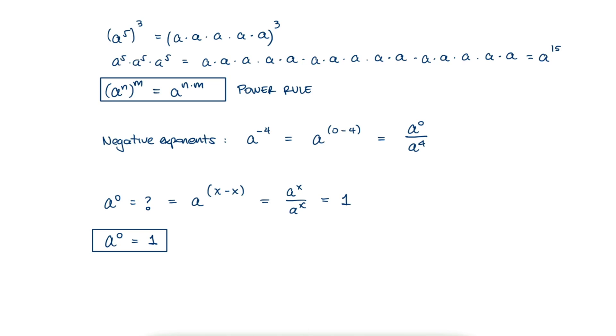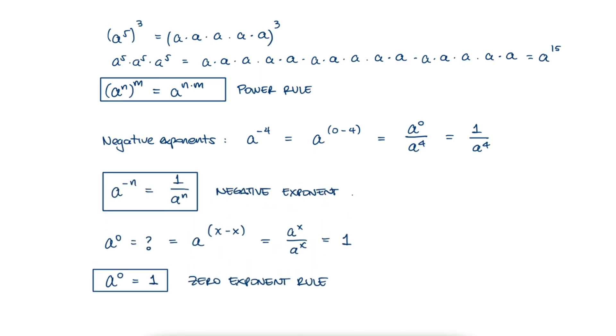And with this, we know that a to the minus 4 is one over a to the 4. These are called the zero exponent rule and the negative exponent rule.